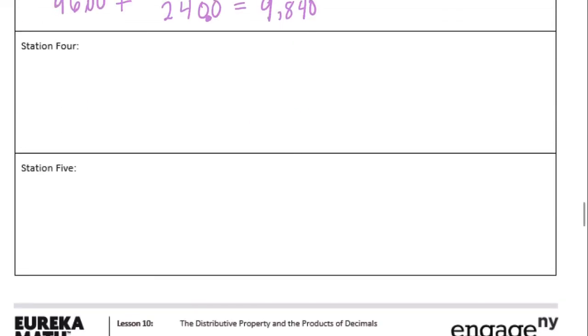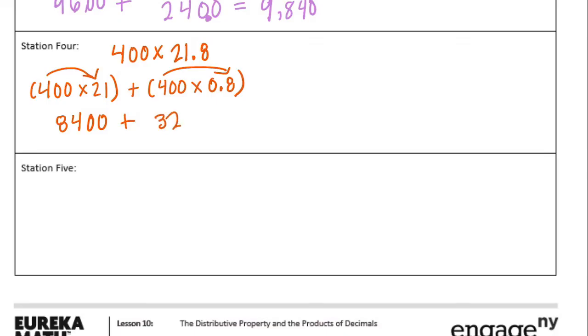Station four: calculate the product of 400 times 21.8. We have 400 times 21 plus 400 times 0.8. 4 times 21 is 84 with two zeros. Plus 4 times 8 is 32 with two zeros, but we need to divide by 10 because it's 8 tenths, so we get 320. Adding those together gives 8,720.